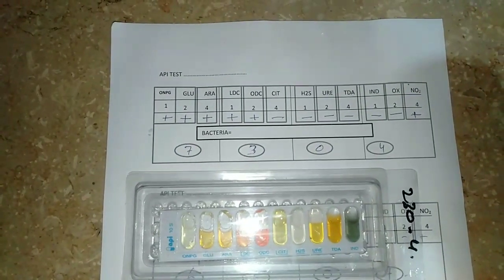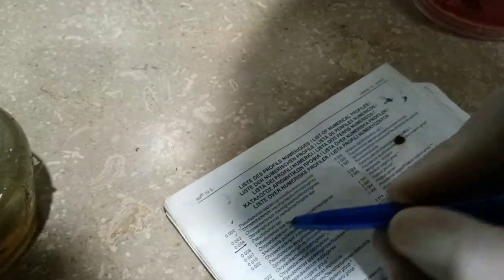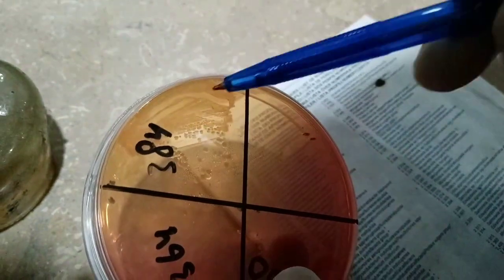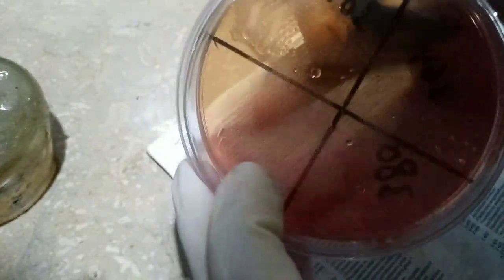The code 7304 matches — as you can see I have already circled it — Hafnia, Enterobacter, Serratia, and E. coli. Since this sample is from urine and E. coli is the most common bacteria in urine, we identify it as E. coli. So the bacteria present in this plate is E. coli. This is all about the API test. I hope this video is helpful — if you like it, please hit the like button and share. Thank you.